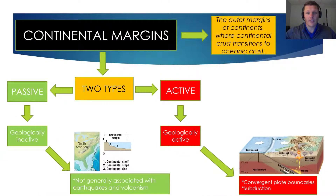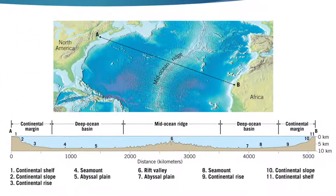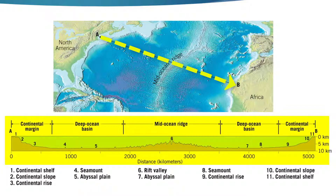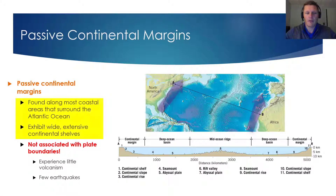Now let's get into more detail regarding continental margins. If we voyaged from point A to point B as shown in this picture, there would be many interesting features on the ocean floor below. Continental margins are found very close to points A and B on this map. Features 1, 2, 3, 9, 10, and 11 in this image all correspond to passive continental margins. Passive continental margins are found along most coastal areas surrounding the Atlantic Ocean, and they exhibit very wide, extensive continental shelves. The continental shelf off the coast of the eastern United States, indicated here in light blue, is quite extensive. I'd like to stress once more that passive continental margins are not associated with plate boundaries — they experience little volcanism and few earthquakes, which makes sense since you typically don't think of volcanic activity or earthquakes on the east coast of the United States.